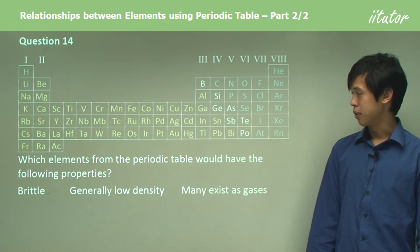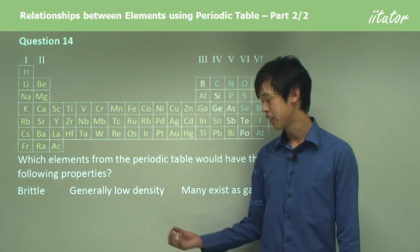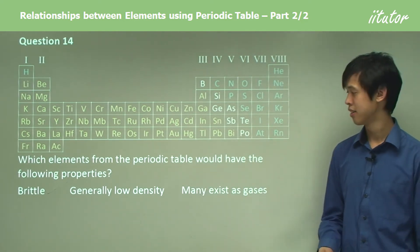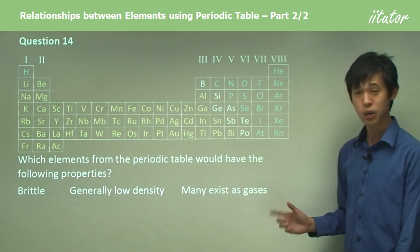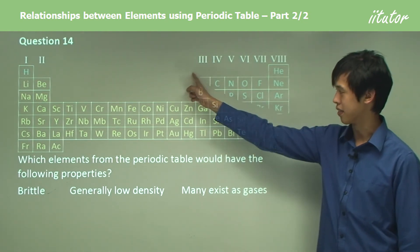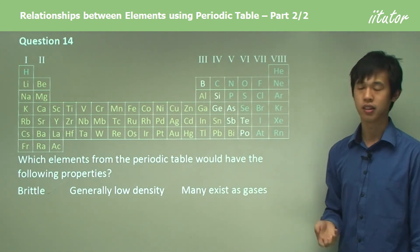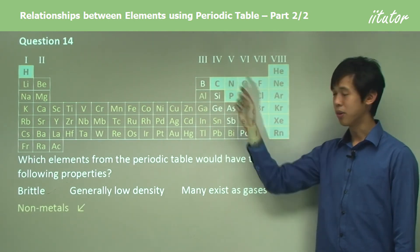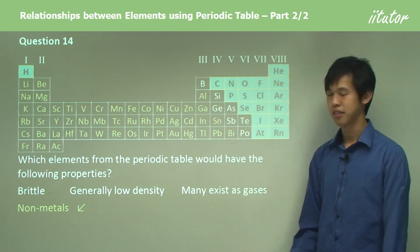Which elements from the periodic table would have the following properties: brittle, generally low density, and most of them exist as gases? Well, these properties are non-metal properties, so we'd be looking somewhere over this side. We know that non-metals are the blue ones, so we generally pick these blue ones as well as hydrogen on the left. Most of them exhibit these properties, with the exception of maybe carbon.